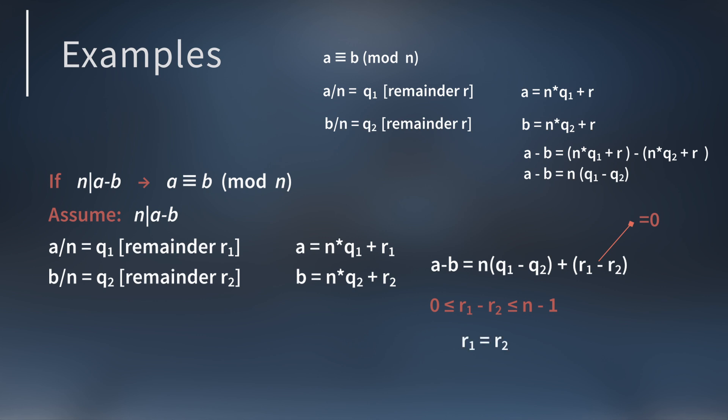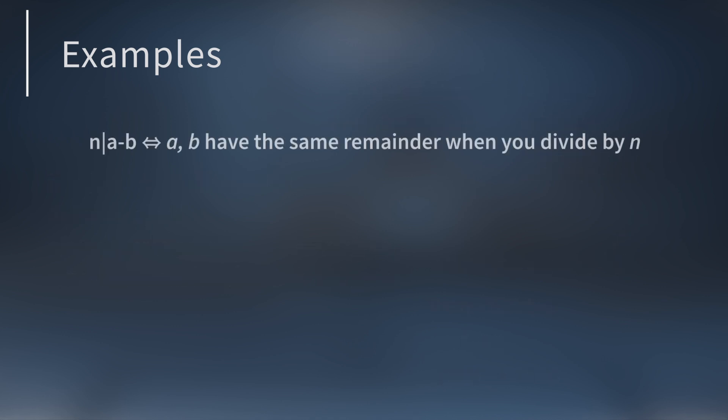The remainders are the same. So a is congruent to b mod n. Since n divides a minus b means that a and b have the same remainder when you divide by n, and vice versa.